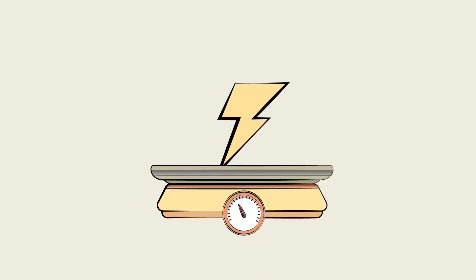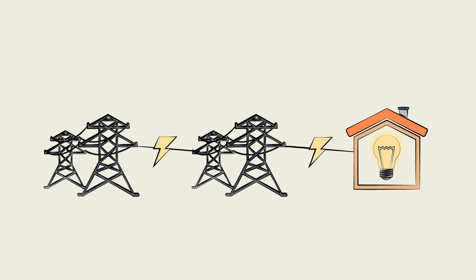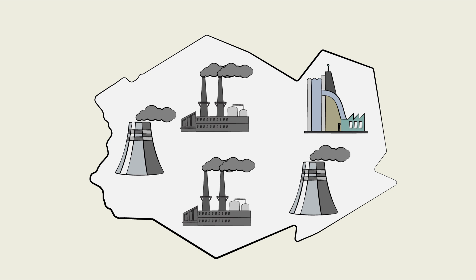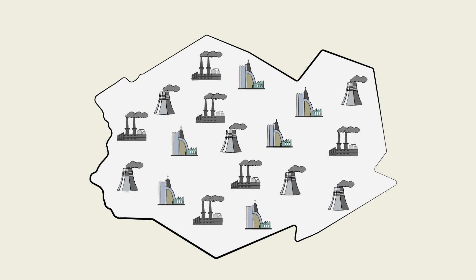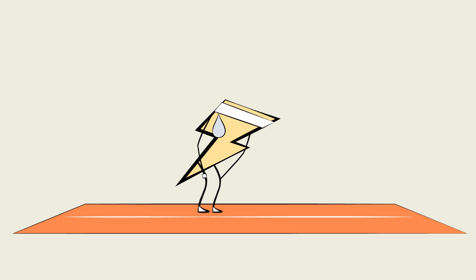Now that you know how electricity is measured, let's look at how it is carried at scale over long distances. Because electricity generation has historically had big economies of scale, it's been cheaper to produce power at a few large generators far from consumers than build a lot more generators that are closer. This meant that electricity needs to be transmitted from far away without losing a large amount en route.